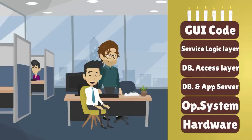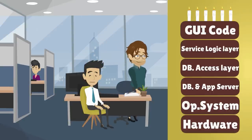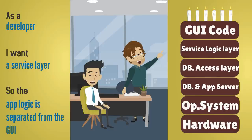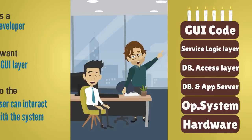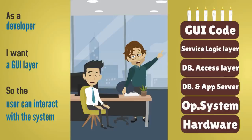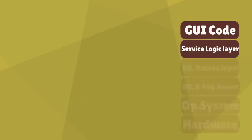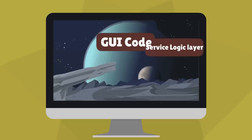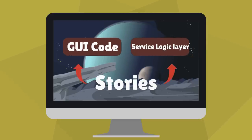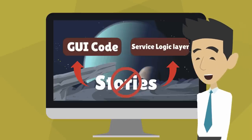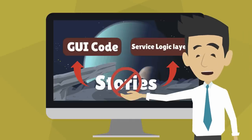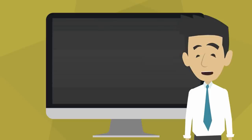So a developer is likely to think in terms of stories like: as a developer, I want a service layer so the application logic is separated from the GUI. Or, as a developer, I want a GUI layer so the user can interact with the system. Having a service layer is good. Having a GUI layer is good. But having stories to build each of these layers violates our principles. It's easy to see why we might end up with stories like this when we recognize the way developers think about an application.